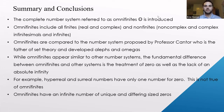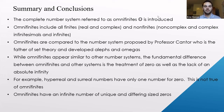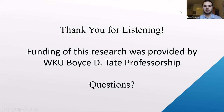In summary, omni-finites are a complete number system including all finites — real and complex numbers — and non-finites: non-complex and complex infinitesimals and infinities. Compared to Cantor's system of alephs and omegas, the fundamental difference is the treatment of zero and the presence of absolute infinity. Hyperreals and surreal number systems have only one zero; omni-finites have an infinite number of unique and different-sized zeros. This research was funded by WKU Boyce D. Tate Professorship.